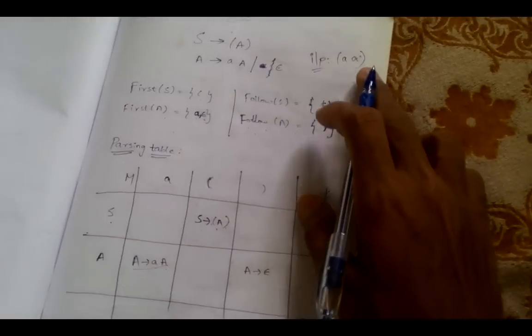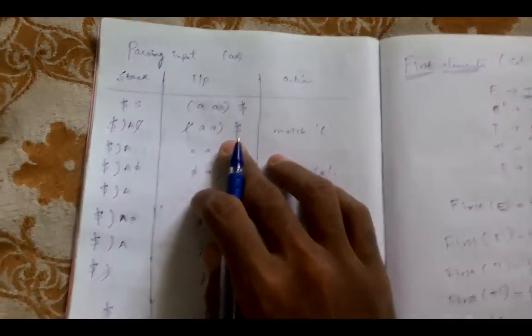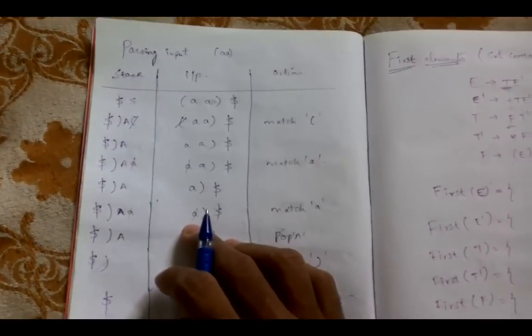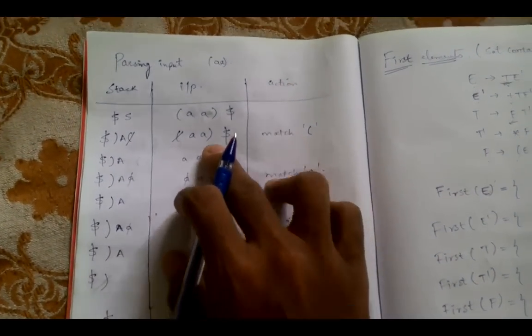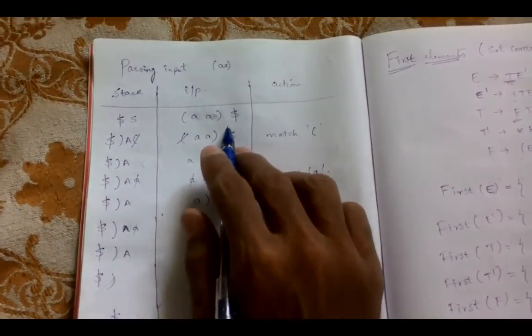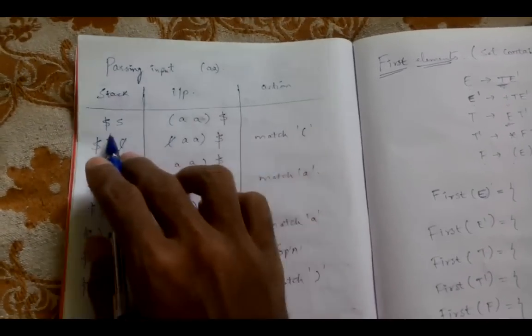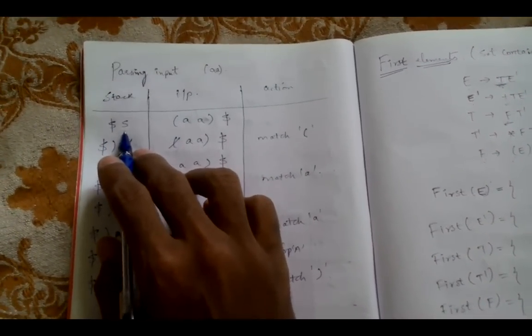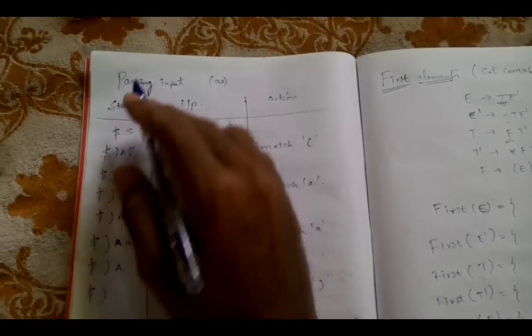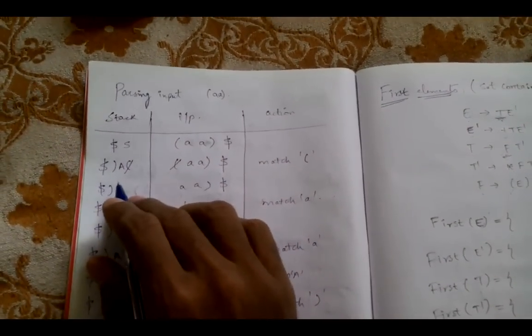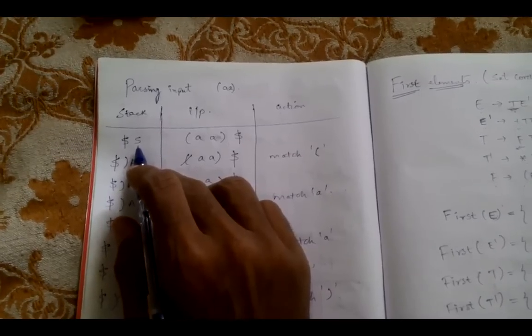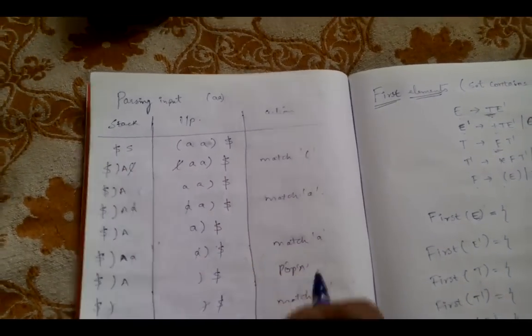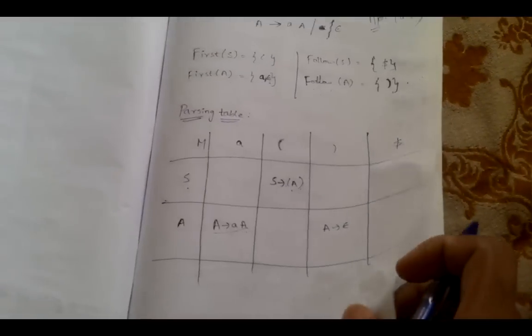Now we need to check whether the given input is accepted by this grammar. For that we create a parsing table with three columns: stack, input, and action. Whatever the input is given, append dollar to it and write it in the input column. The stack has the start symbol at the beginning, because LL1 is a top-down parser, so we start with the start symbol of the grammar.